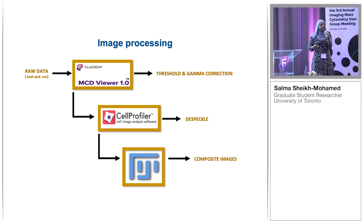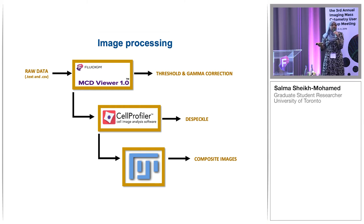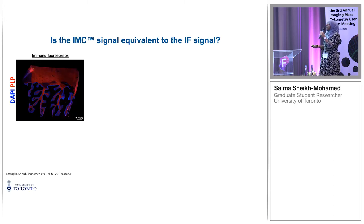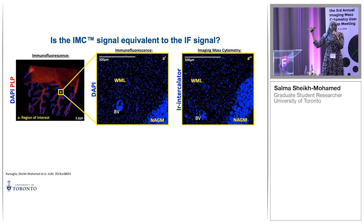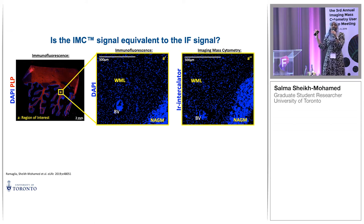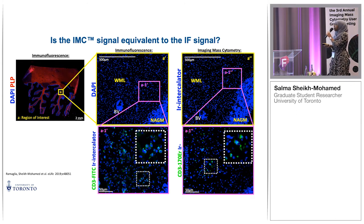For data processing, we used MCD Viewer to threshold and gamma correct all images to ensure everything started on the same playing field, then Cell Profiler for despeckling and ImageJ for creating composite images. The first question we had to ask was whether our IMC signal was equivalent to what we already had by IF. Looking at the same brain tissue area stained by immunofluorescence and by IMC — comparing DAPI to intercalator and CD3 for T cells — we see almost identical staining patterns. This tells us our IMC signal can be trusted.